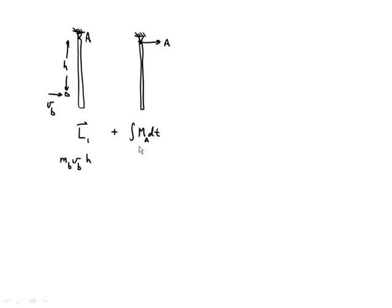That angular impulse is going to be zero. There is a force there and I'm going to take advantage of that for the linear impulse — the mass of the bullet times velocity of the bullet plus the integral of A DT. But that's the linear impulse, whereas the angular impulse is what I'm concentrating on here. So I have the initial angular momentum, the angular impulse, and this should equal the final angular momentum.